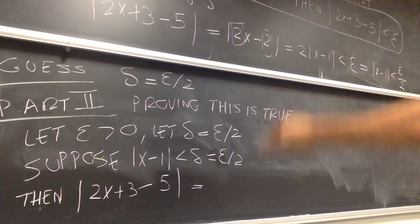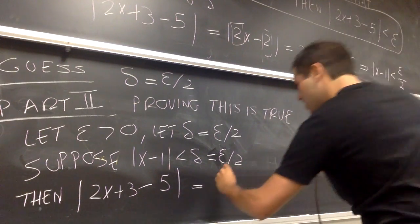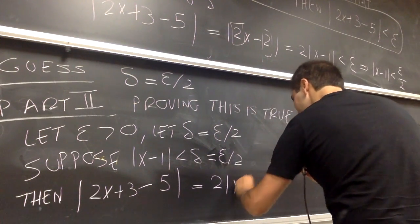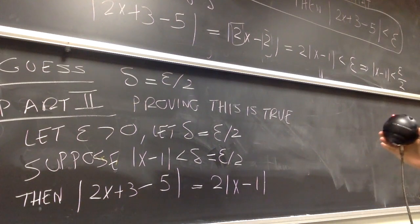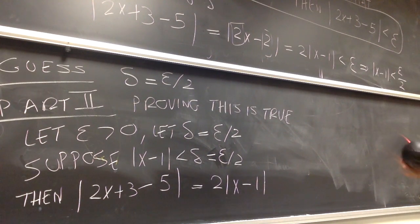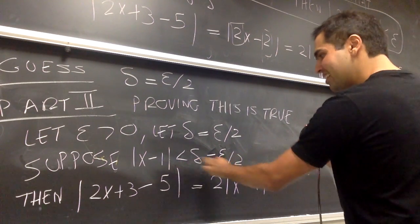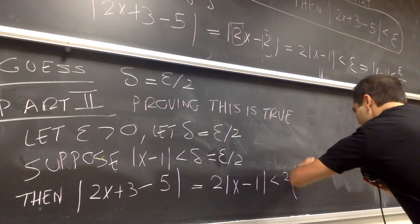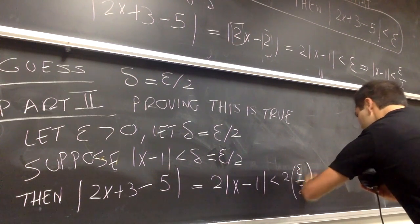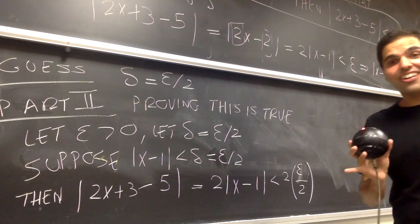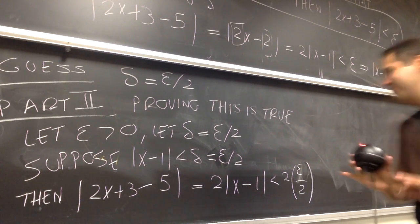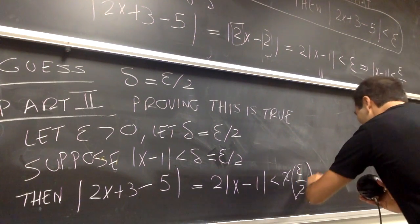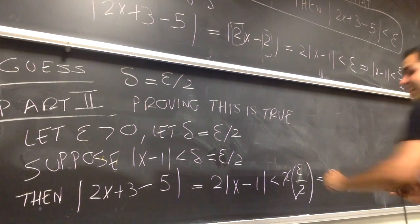But, look, we've already done all this work. Before, we found that this expression is precisely equal to absolute value of 2 times x minus 1. But, now remember that absolute value of x minus 1 is less than Epsilon over 2. So, this is 2 times Epsilon over 2. And now, look at the most exciting part of the proof. The 2s cancel out. And, you get Epsilon.